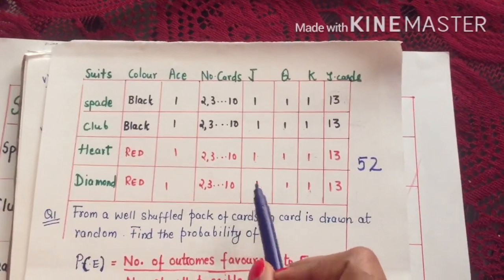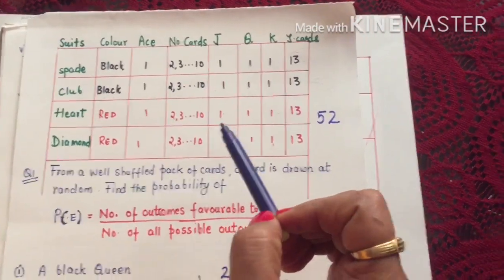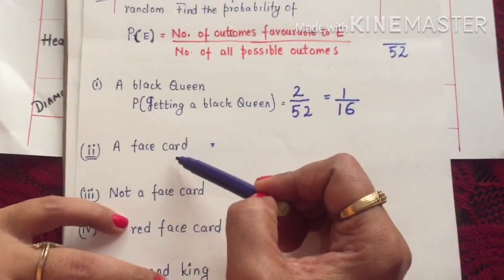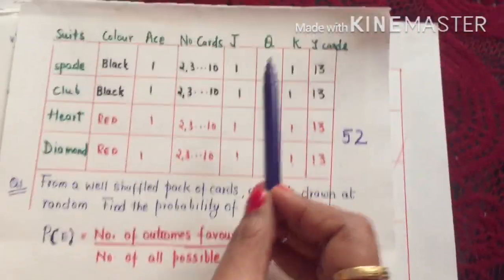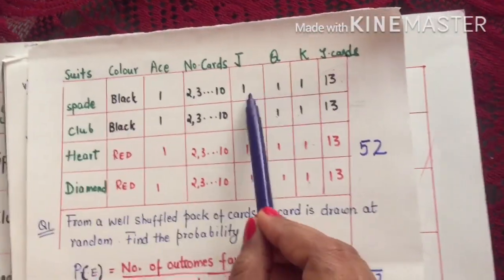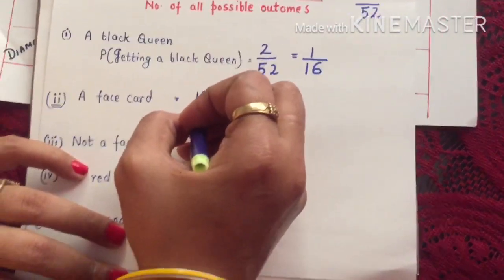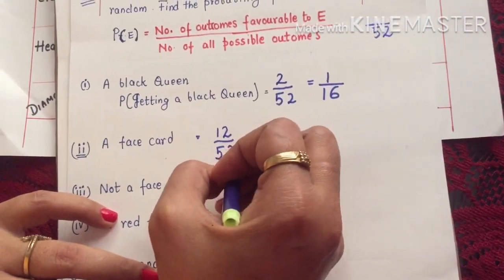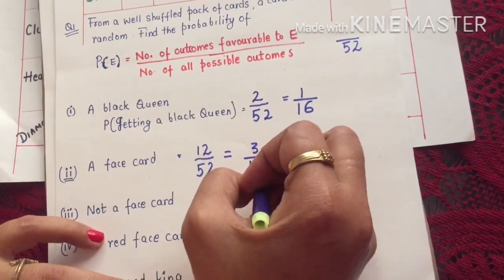Next: probability of getting a face card. Jack, Queen, and King are the face cards. There are 3 face cards in each of the 4 suits, giving a total of 12 face cards. So favorable outcomes are 12 and possible outcomes are 52. When reduced, the probability becomes 3/13.